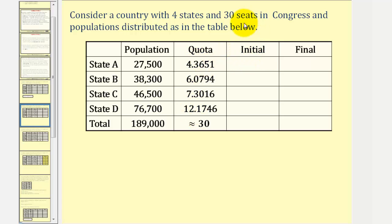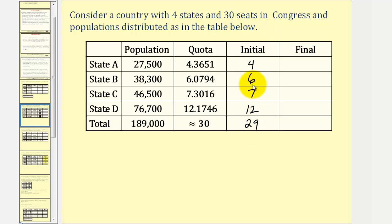For the initial apportionment — the initial assignment of the seats in Congress — we remove the decimal parts of the quota. State A would receive four, state B would receive six, state C would receive seven, and state D would receive twelve. Notice how the sum here is 29, and we have a total of 30 seats. We now assign the remaining seat to the state whose quota has the largest decimal part. State A has the largest decimal part at .3651, and therefore state A receives one more seat.